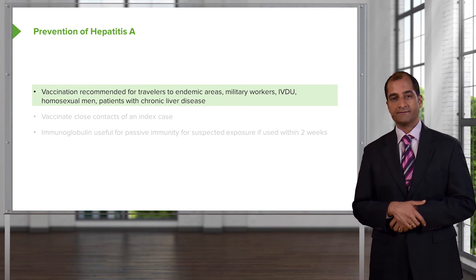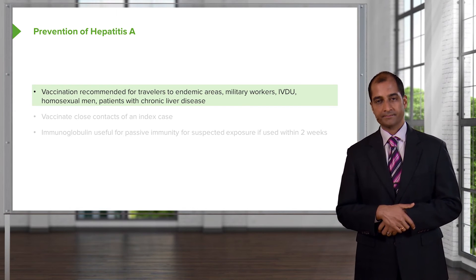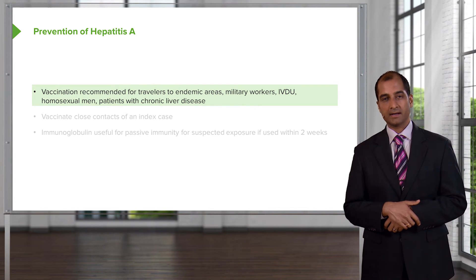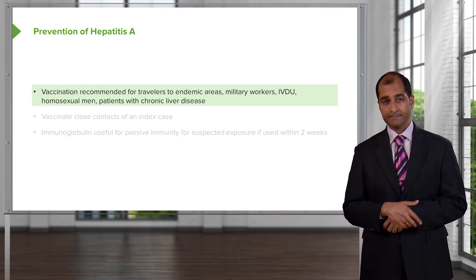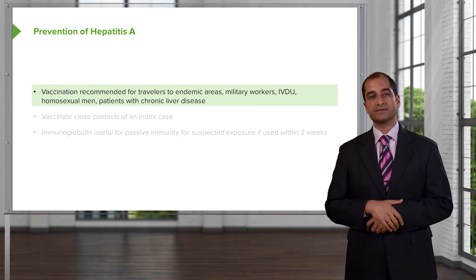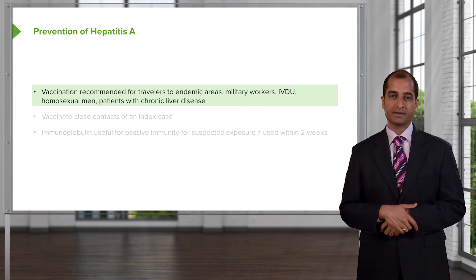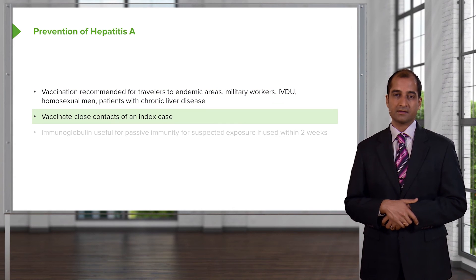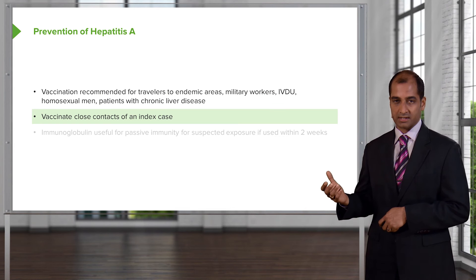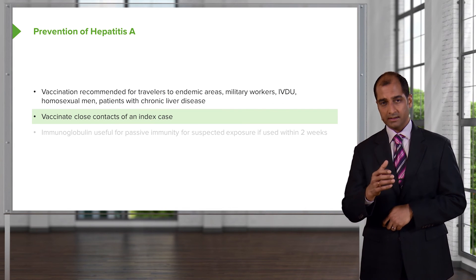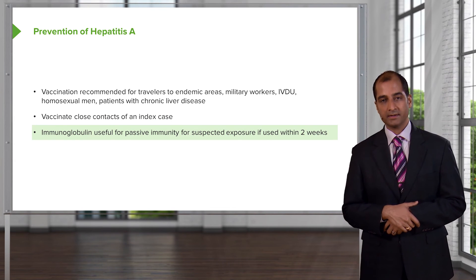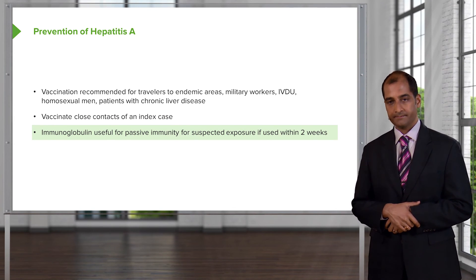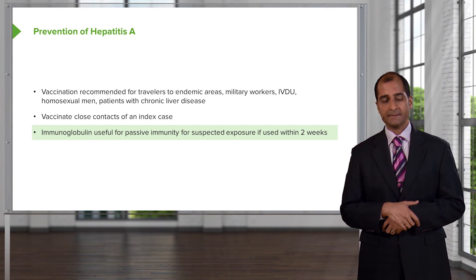Prevention of hepatitis A: vaccination is recommended for travelers to endemic areas, military workers, IV drug users, and homosexuals — remember, fecal-oral is the route. Patients with chronic liver disease should also be vaccinated, since hepatitis A will only worsen pre-existing disease and can lead to fulminant hepatitis. Vaccinate close contacts of a case, such as prisoners. Immunoglobulin is useful for passive immunity for suspected exposure if used within two weeks.